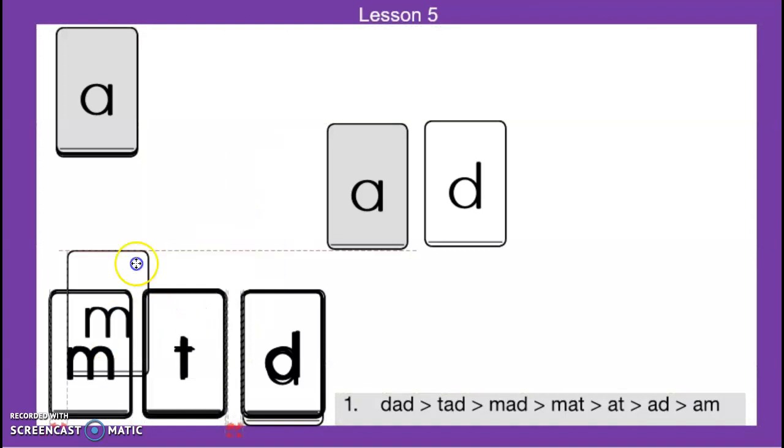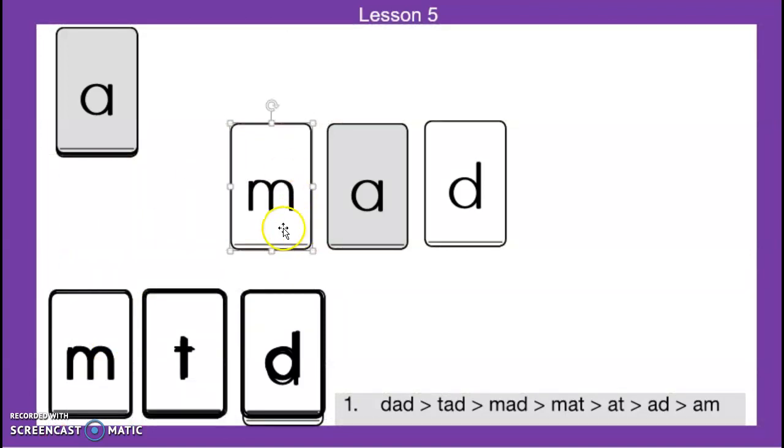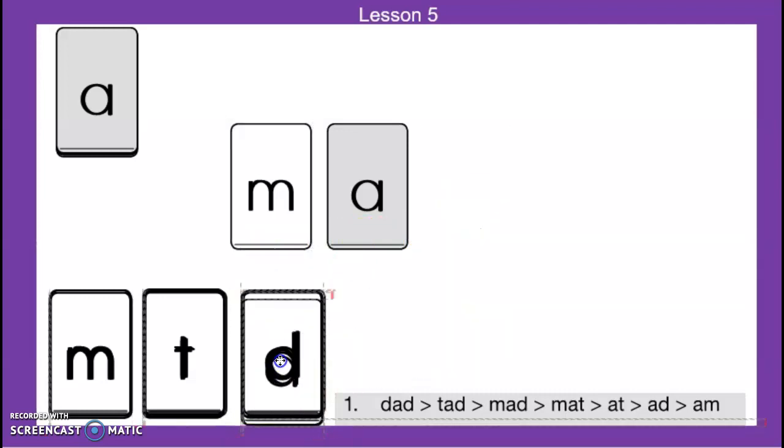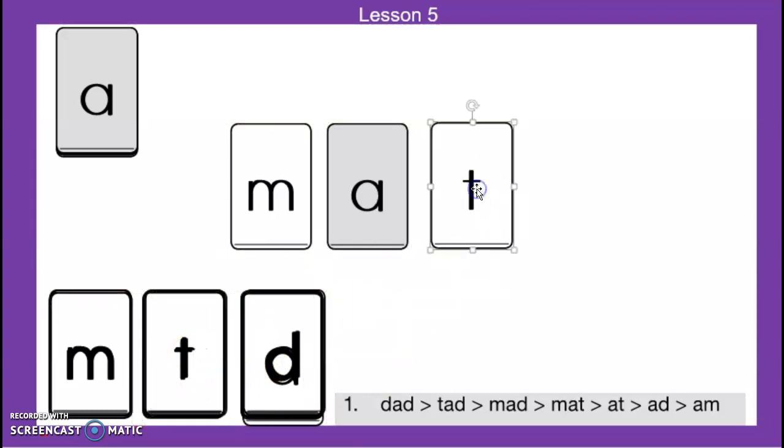Okay, so now we're going to take the d sound off and replace that beginning sound with a mmm. Mmm add. Mad. Good job. Now we're going to take the d sound at the end and put a t. Mmm add, mad, mat.